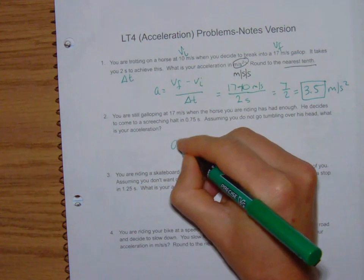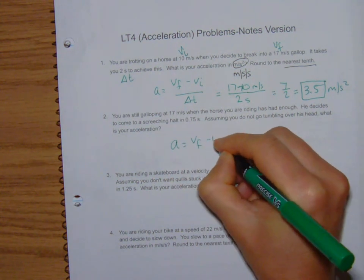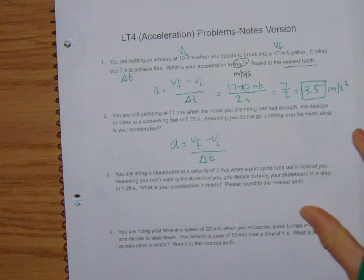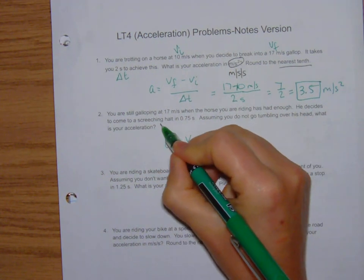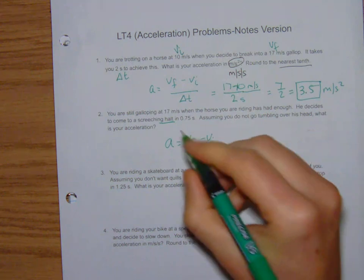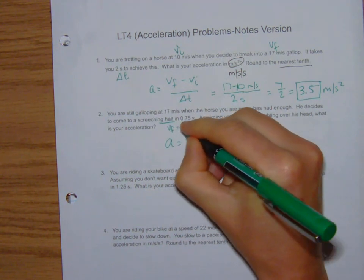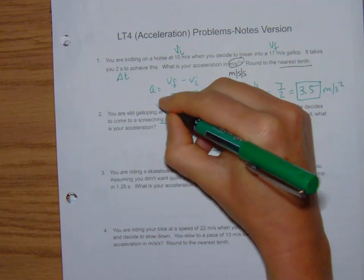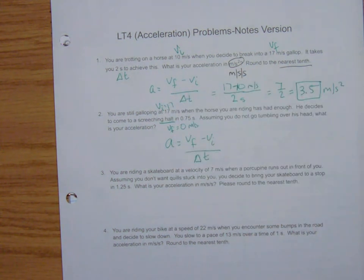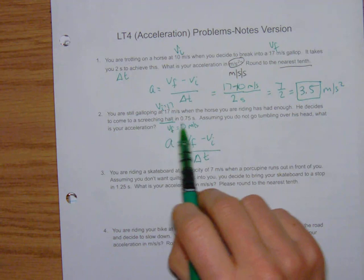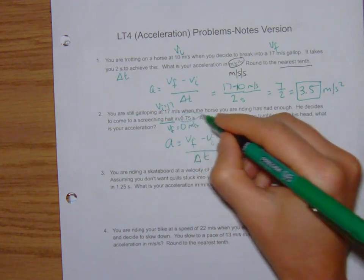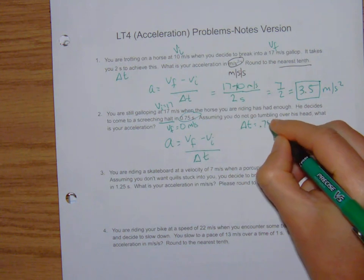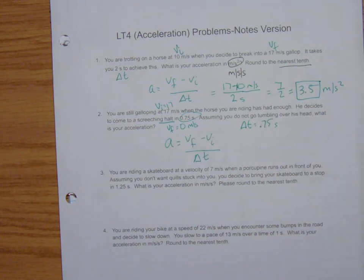Same formula. Something different though this time is we are slowing down. We are going at 17 and we are coming to a halt. A halt is a stop. That's how fast you're going at the end of the problem. So our final velocity is 0. This time our initial velocity is 17. And our change in time is 0.75.